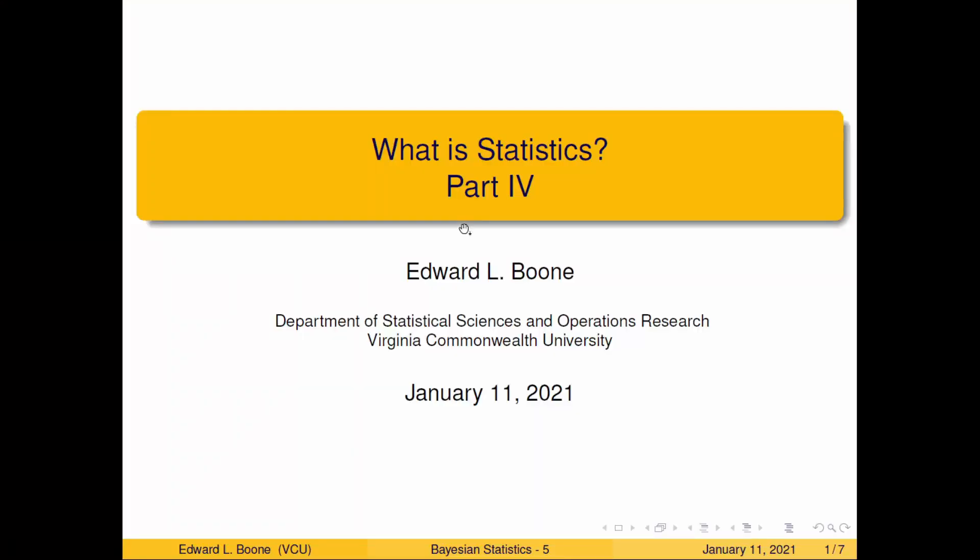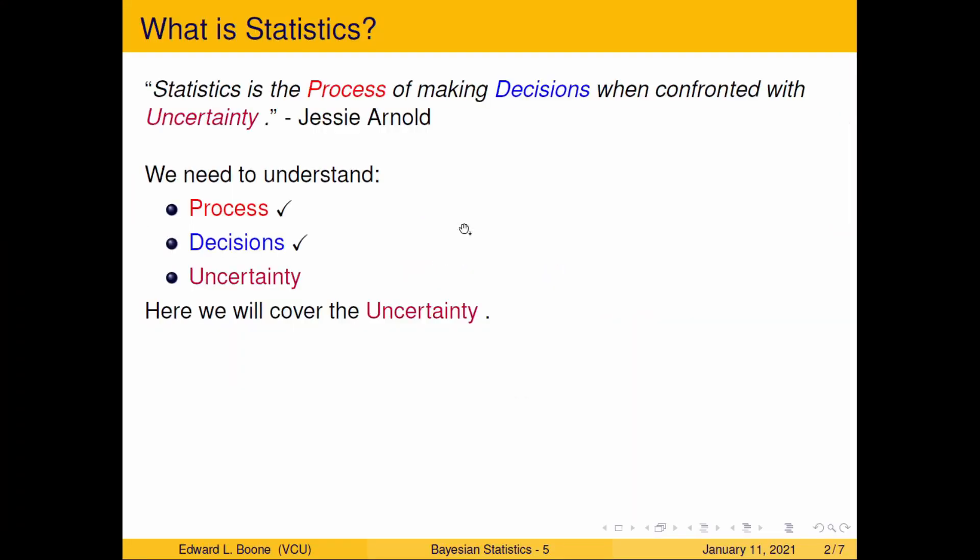Welcome to 'What is Statistics?' part four. We're looking at Jesse Arnold's definition of statistics: statistics is the process of making decisions when confronted with uncertainty. So far we've talked about the process and the decisions. Now we're going to talk about uncertainty. If you haven't watched the previous two videos, you might get a little lost, so I'd highly recommend you go back and do that.